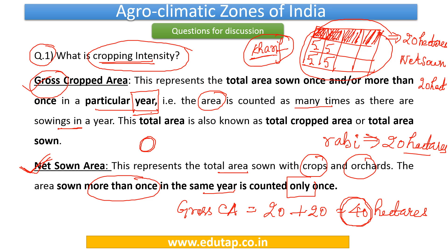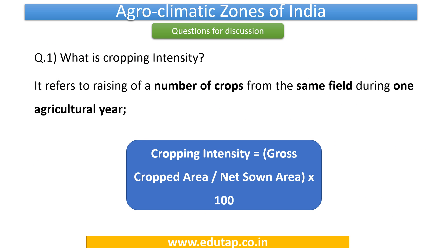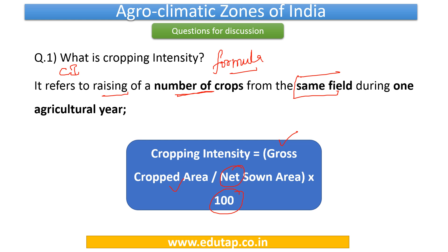Having understood gross cropped area and net sown area, let us look at the definition and formula for cropping intensity. The formula is: gross cropped area divided by net sown area, multiplied by 100. Basically, cropping intensity means raising a number of crops from the same field during an agricultural year. The same field is the key — rather than increasing the area of production, we are using the same land more than once in an agricultural year.